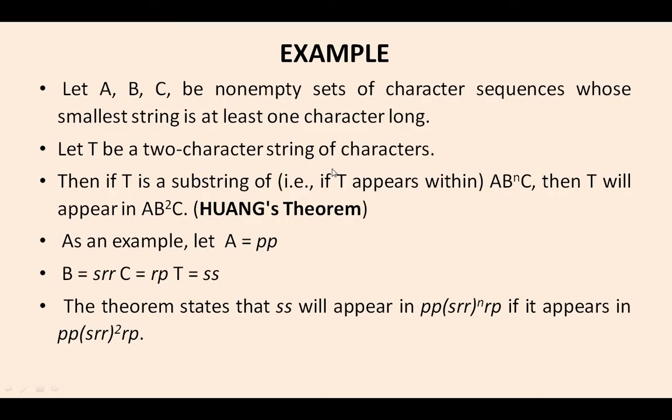Then if T is a substring, it will appear in AB^nC. Then T also will appear in AB²C according to Huang's theorem. What it is saying is: if T is a substring and it appears in AB^nC, then T will appear in AB²C.